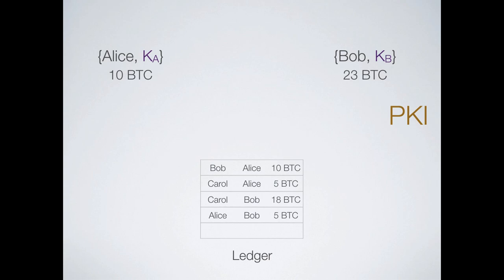The next question: the ledger can check that the transaction was signed by Alice's key, but how did the ledger decide which key is Alice's? A key is just a random number. When you bind keys to identities, we call that public key infrastructure or PKI — and any time you have digital signatures, you have a PKI that goes along with them. What Bitcoin does is very interesting: they punt on how to bind Alice's key to Alice. Instead, they make your identity the key itself. People move money from one key to another key. The ledger doesn't try to enforce that a key belongs to Bob or Alice.